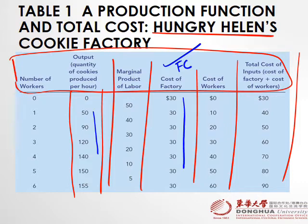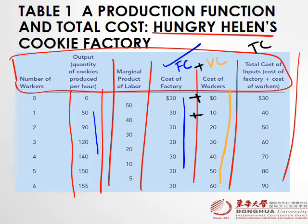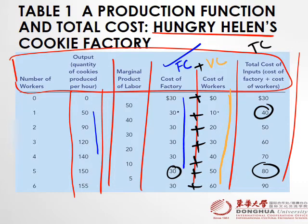When you look at the cost of workers compared to output — output is increasing and cost of workers are also increasing — so that is variable cost. Total cost is the sum of fixed cost plus variable cost. For example, 40 came from fixed cost 30 plus variable cost 10; and 80 came from fixed cost 30 plus variable cost 50.